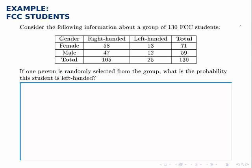This example has what's called a contingency table, or a two-way table. We have 130 FCC students broken down by gender and by dominant hand — male and female, and then right-handed and left-handed.